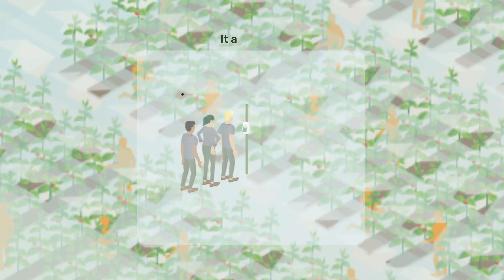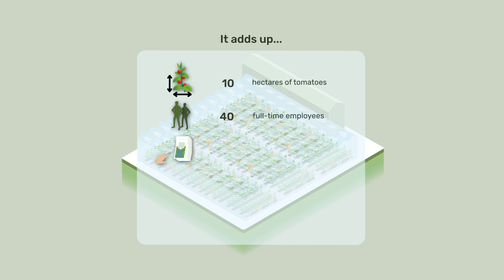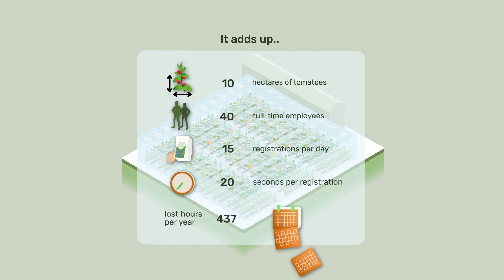Take this greenhouse with 10 hectares of tomatoes and 40 employees, who each register 15 actions per day. Every activity registration takes 20 seconds to complete, resulting in a total of 867 hours lost on data entry a year.